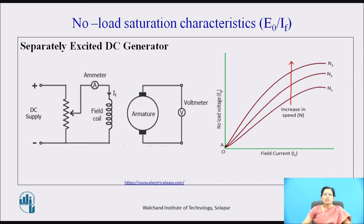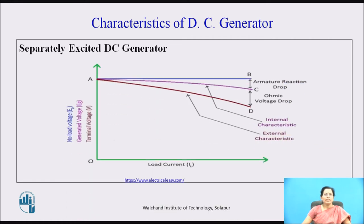For speeds n1, n2, n3, as we increase the speed, the induced EMF also increases. For internal and external characteristics, we connect a load across the generator. AB indicates the no-load voltage, which remains constant as we increase the load current. AC indicates the internal characteristics — voltage drops due to the demagnetizing effect of armature reaction as we increase I_L. AD indicates the external characteristics — terminal voltage decreases due to ohmic voltage drop across the armature.